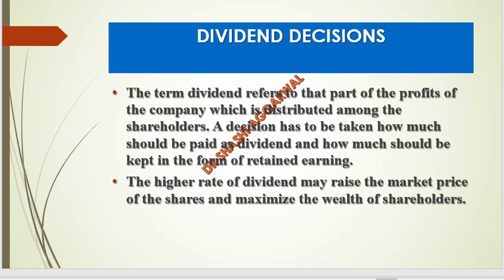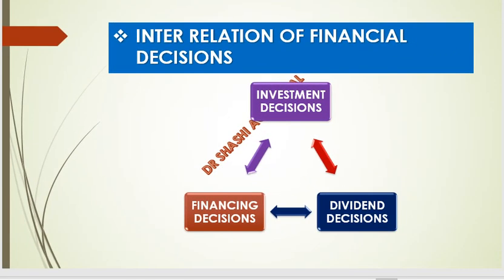We have to assess all these things — the expansion needs of the firm — to decide how much dividend to pay and how much to retain. In this way, we see investment decisions, financing decisions, and dividend decisions, and all three are interrelated and interdependent.